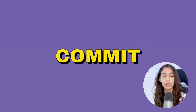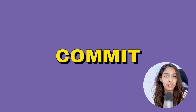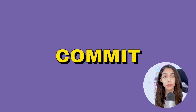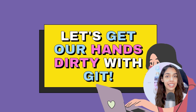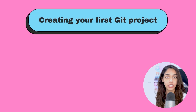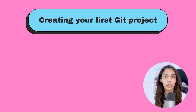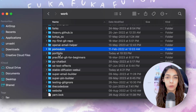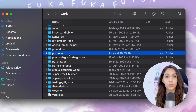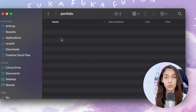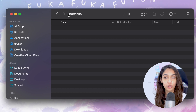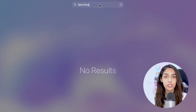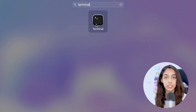You might not be able to grasp it well enough right now, so let's start working with Git first and then try to understand this better. To be able to use Git in your projects, you need to first turn on Git for your project. You need to be familiar with the terminal and know about some basic terminal commands. The very first step is to create a project — let's assume we are building a portfolio website. I create a new empty folder called portfolio and then open the terminal on my machine.